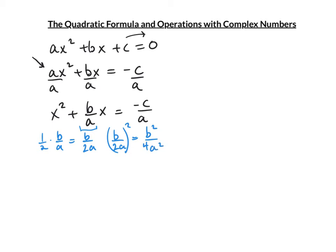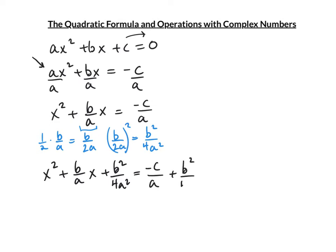We add b²/(4a²) to both sides: x² + (b/a)x + b²/(4a²) = -c/a + b²/(4a²). This is a perfect square — it's (x + b/(2a))².